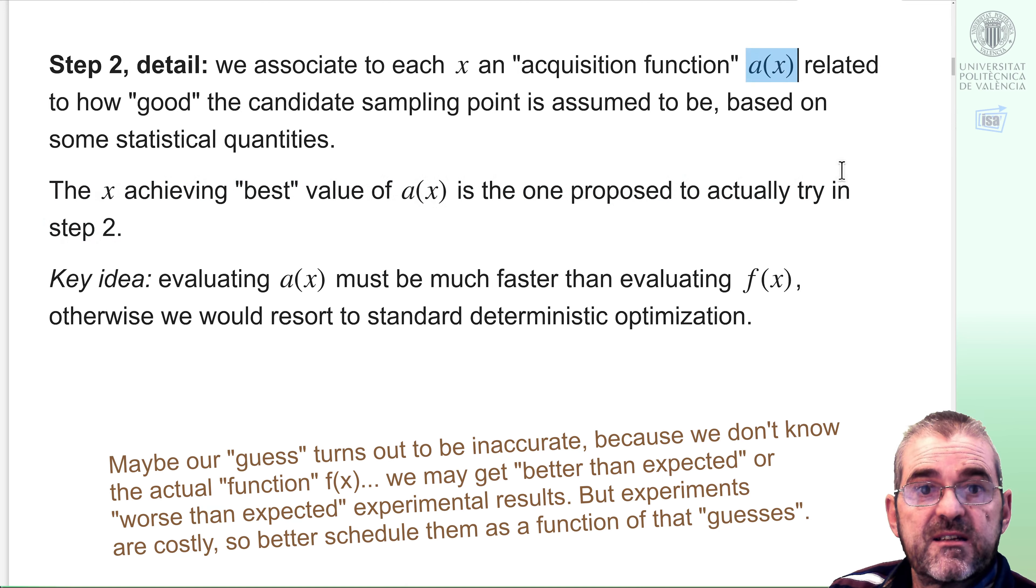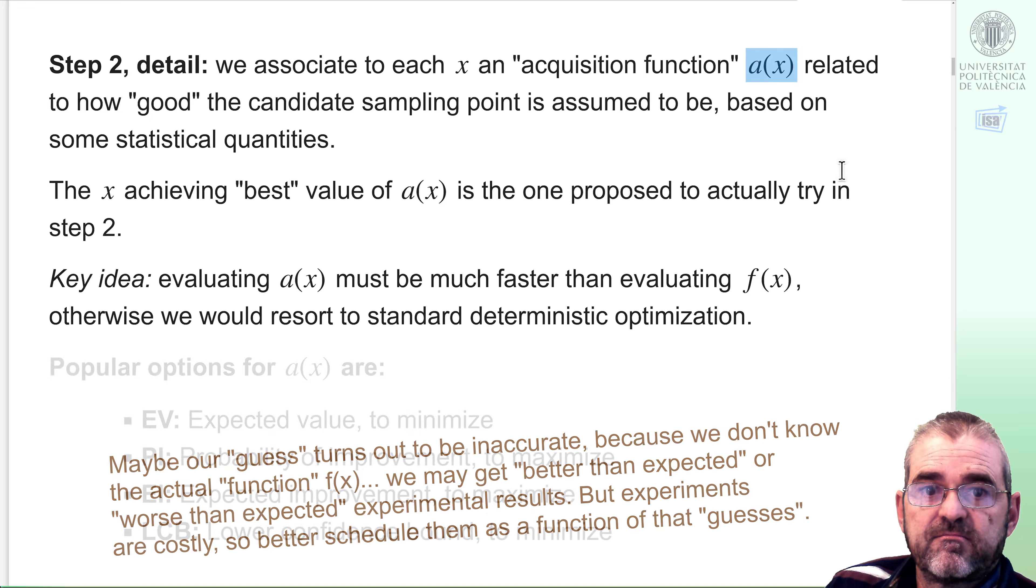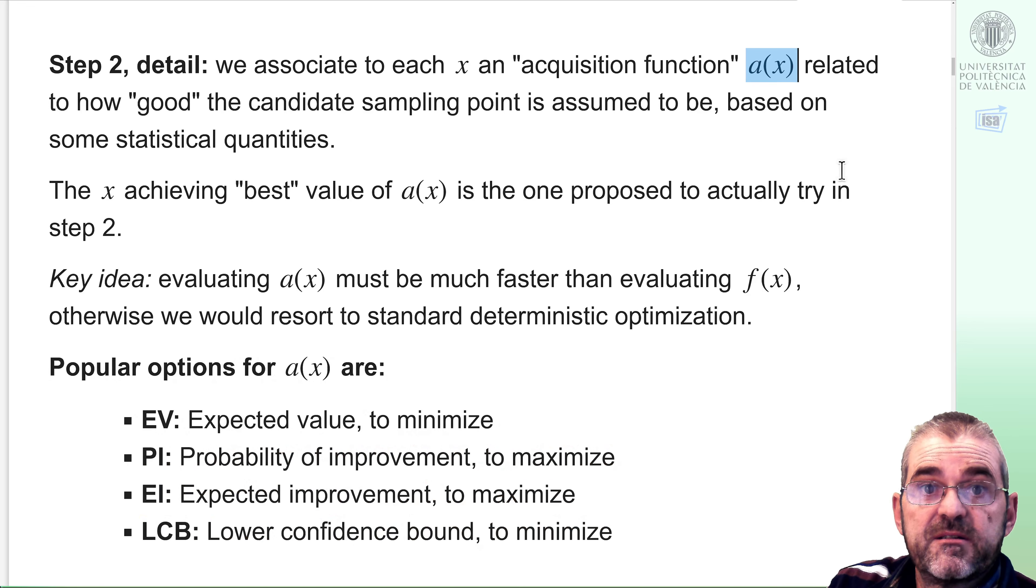Then what things can we use as acquisition function a of x? There are quite a few choices in literature. These are the popular ones, expected value. If the expected value is low, that indicates that on average I will get a good performance there. Lower confidence bound, if I am lucky, how low may the function reach at a given point. And we have another ones, which are probability of improvement and expected improvement.